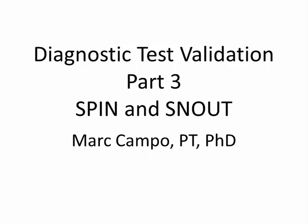This is Diagnostic Test Validation, Part 3: SPIN and SNOUT. SPIN and SNOUT are acronyms used to describe how tests with either high sensitivity or high specificity can be used to rule out or rule in diseases. In this tutorial, we'll explain what these acronyms mean and show you how to apply them in clinical situations. Let's begin with SNOUT, because I'd like to discuss sensitivity before specificity.